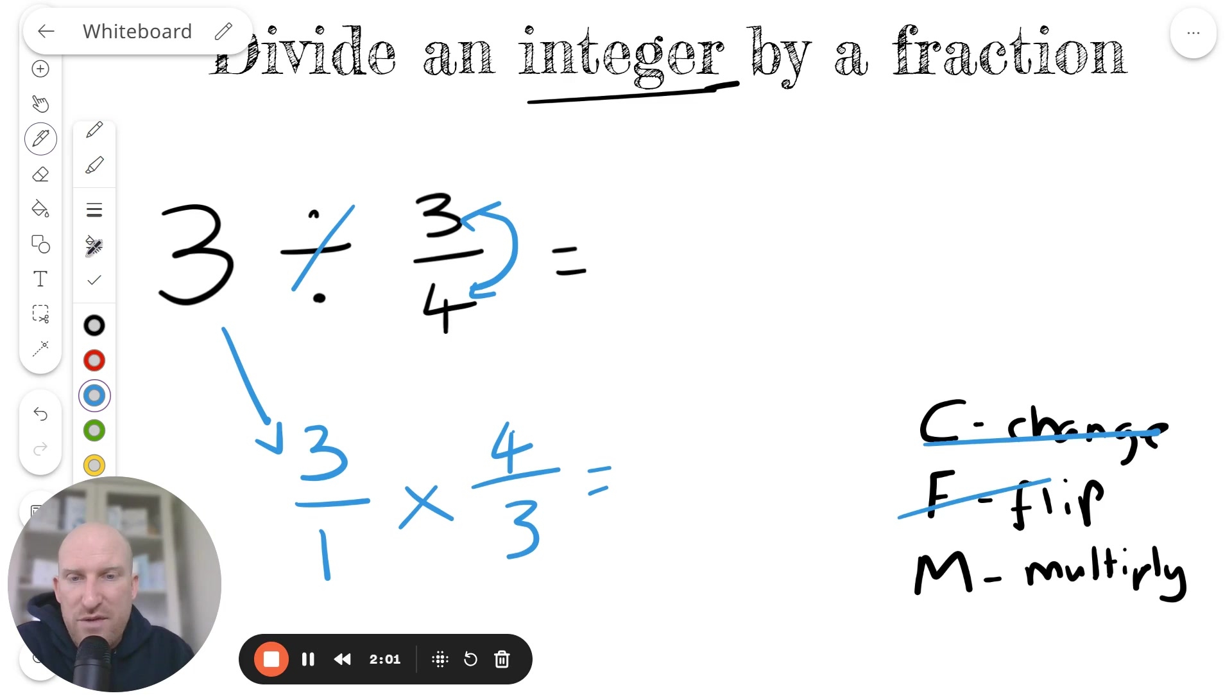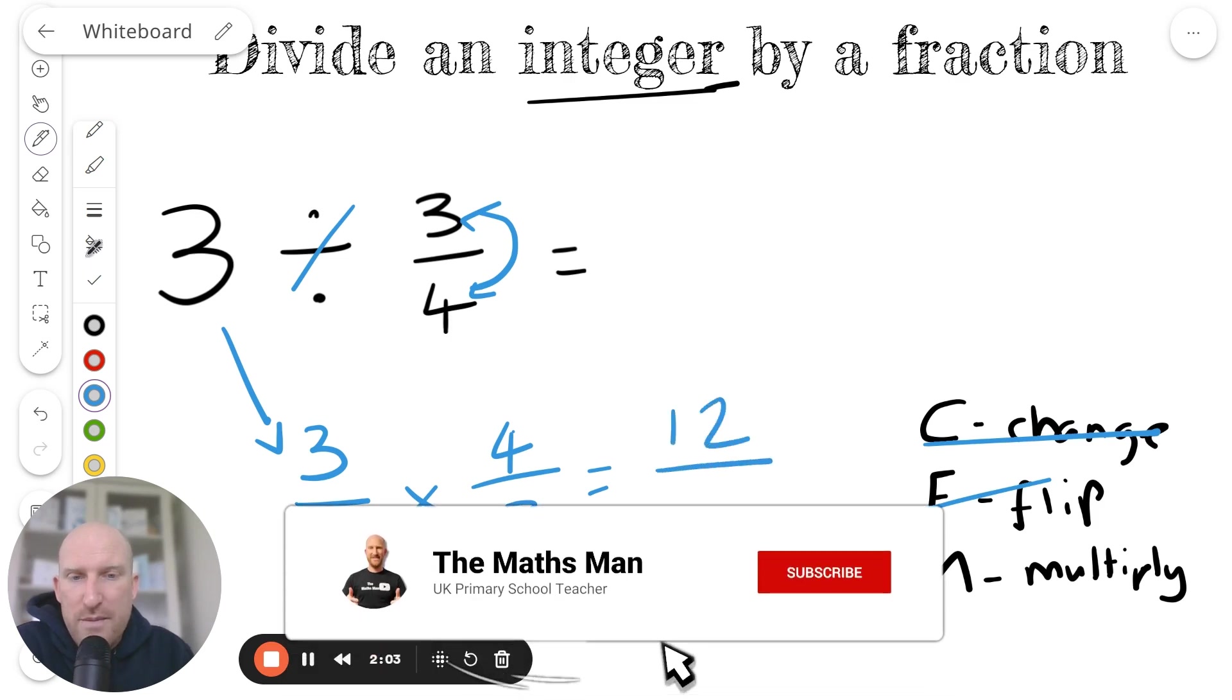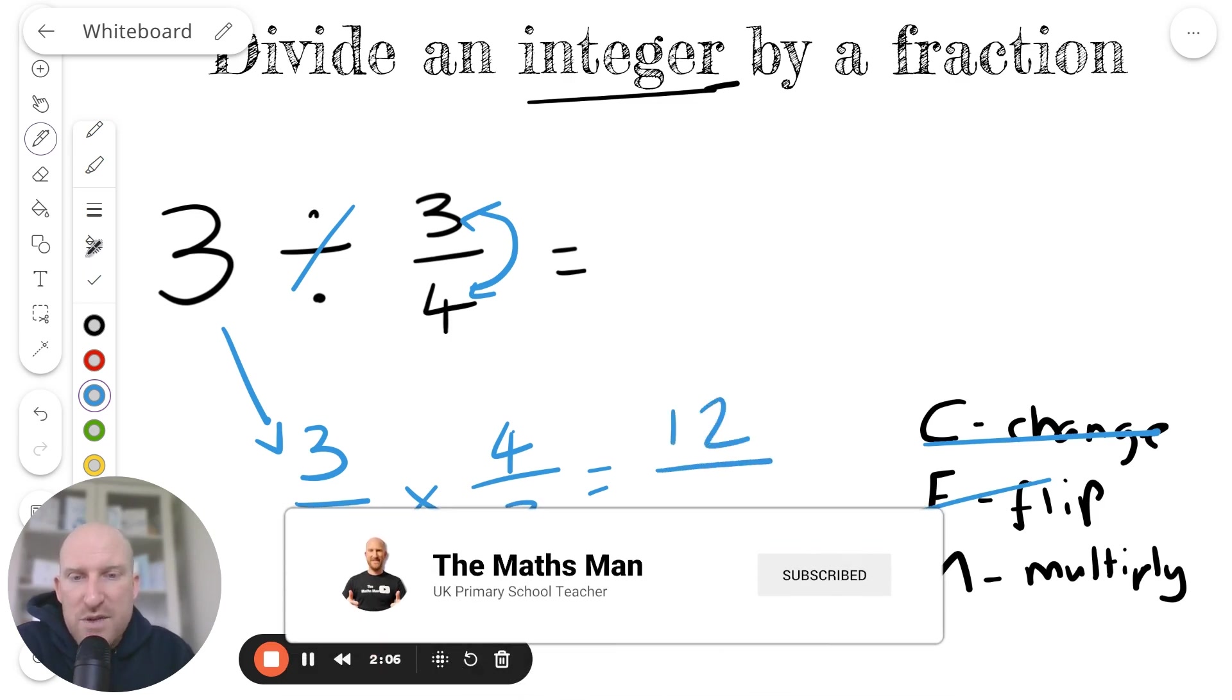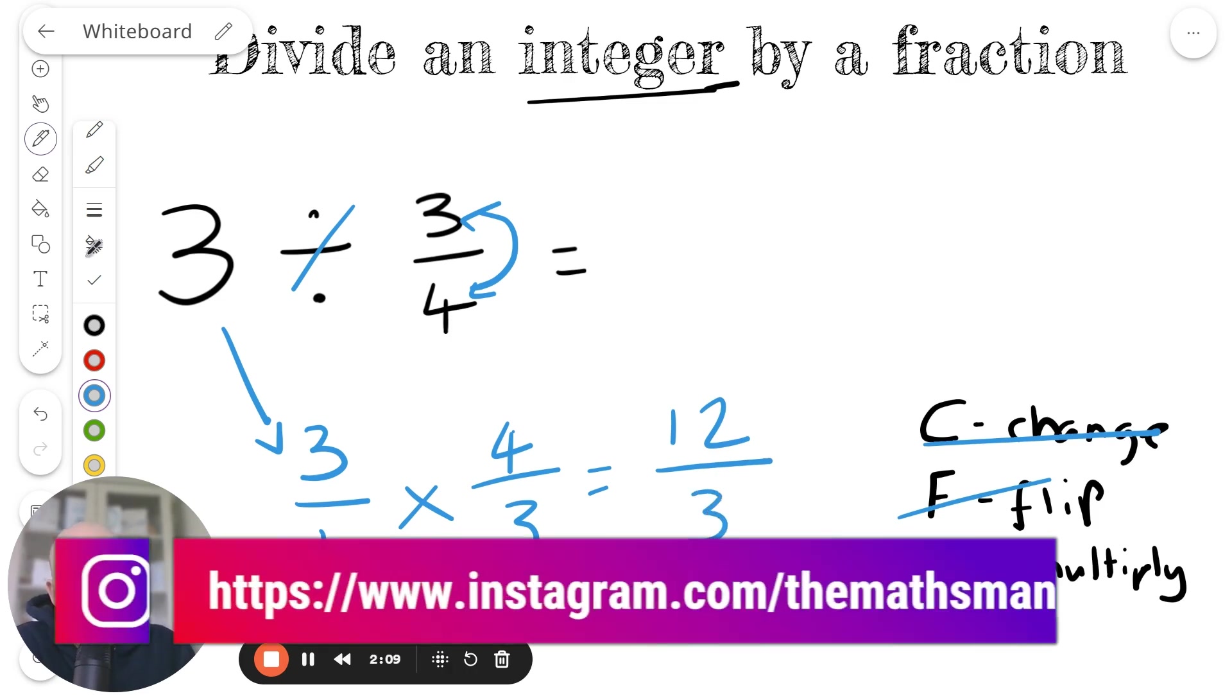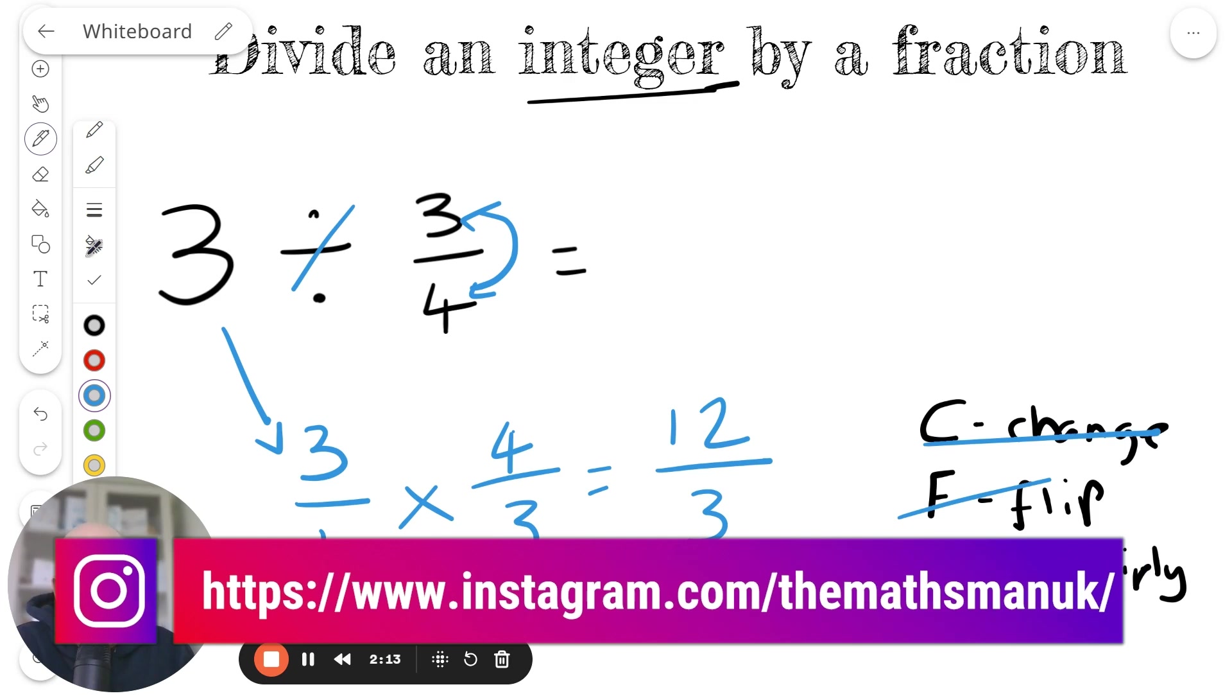So now if I just go ahead and work this, 3 times 4 gives me 12, and then we have 1 times 3, which is 3. And that is my final answer, which is 12 over 3.